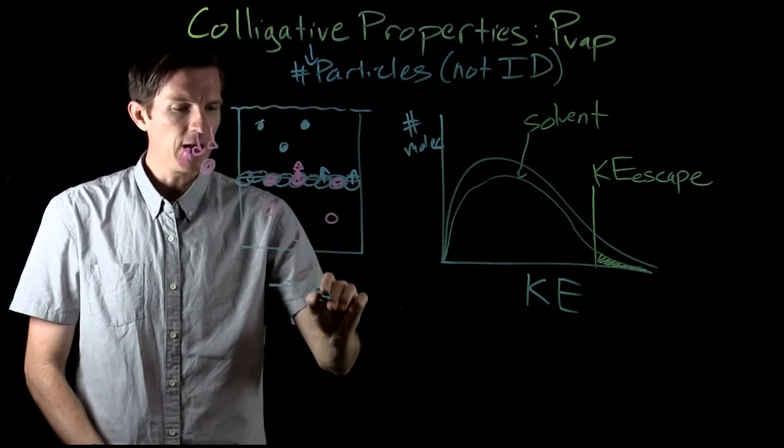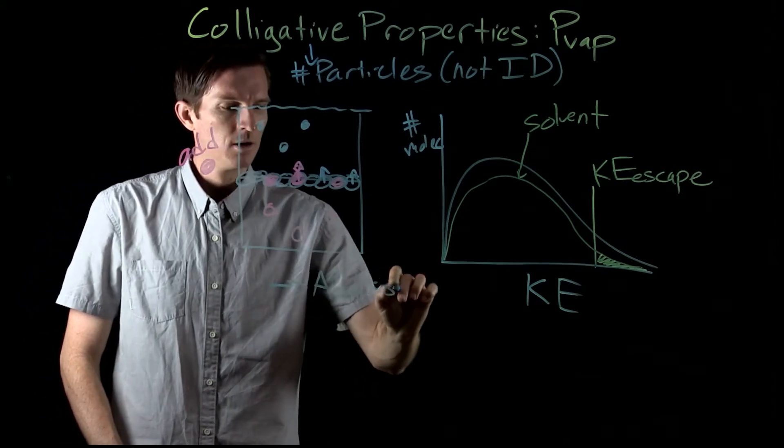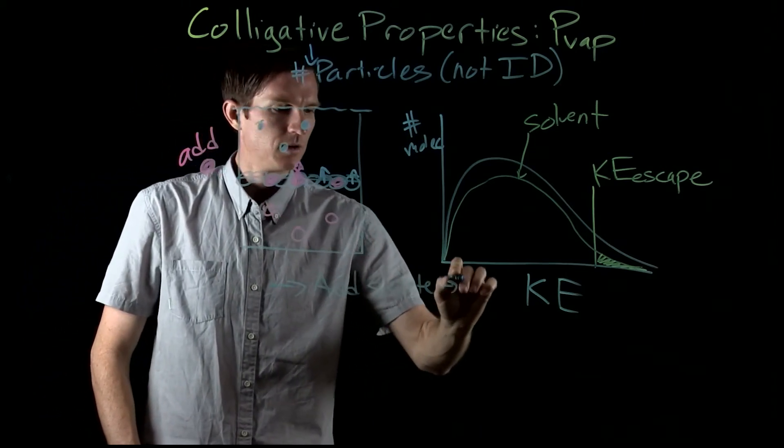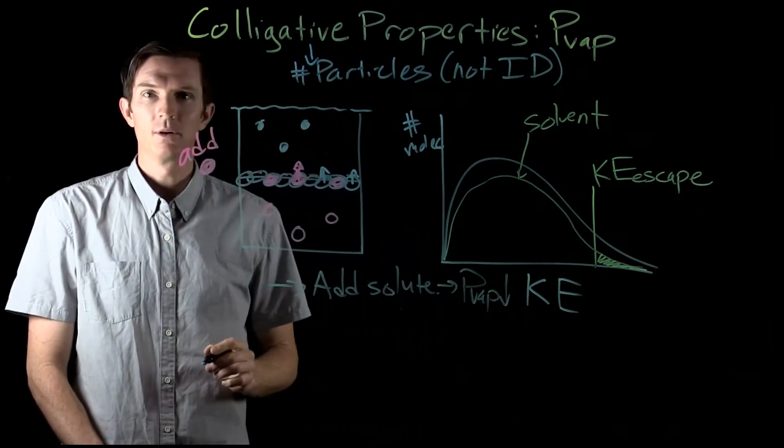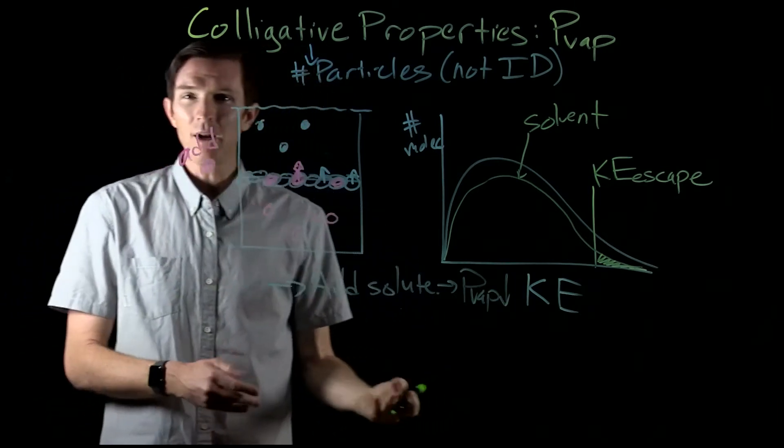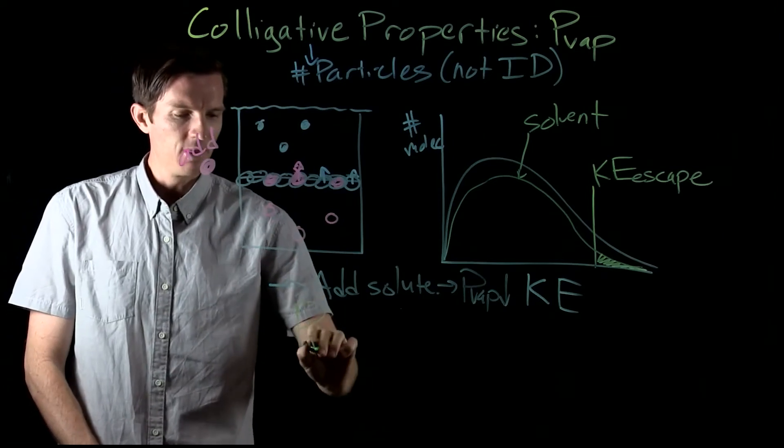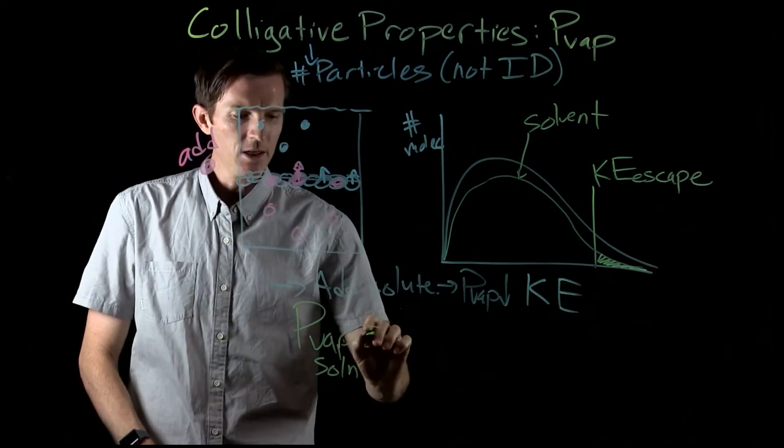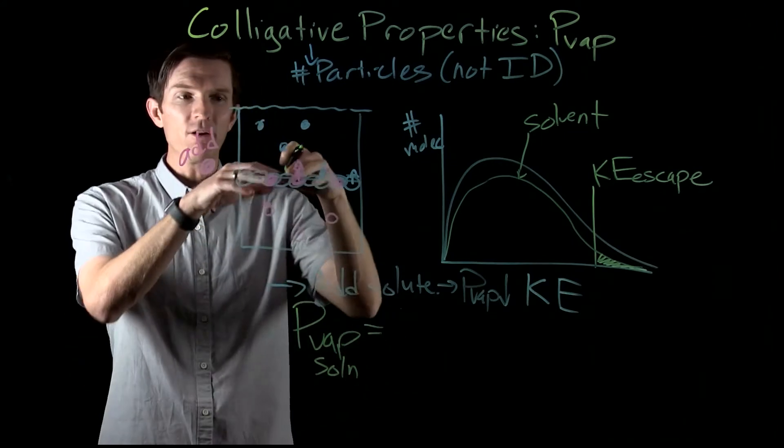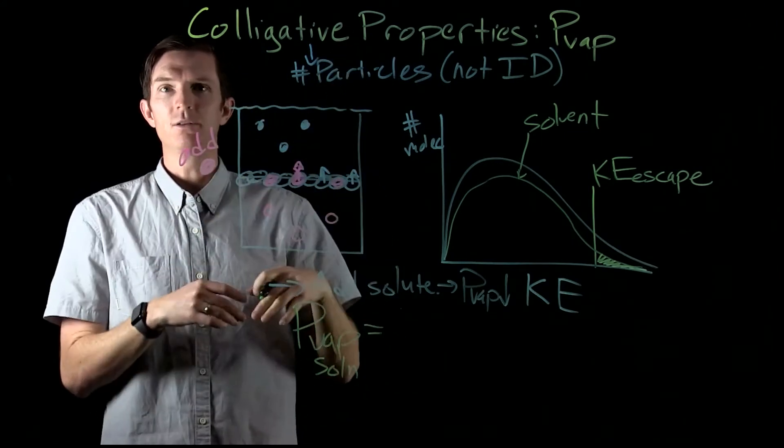So what we'll see is when we add a solute, the vapor pressure is going to decrease. And we can mathematically express this by saying the vapor pressure of the solution that we created is equal to the amount of particles that can't escape.